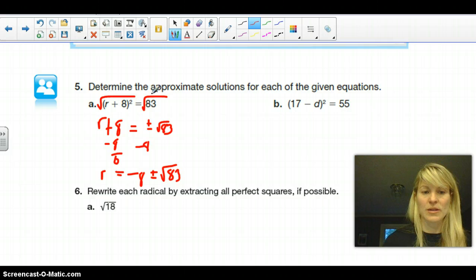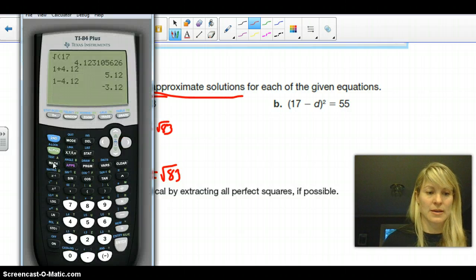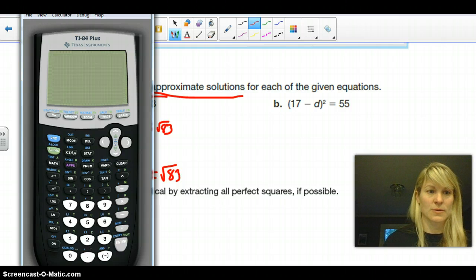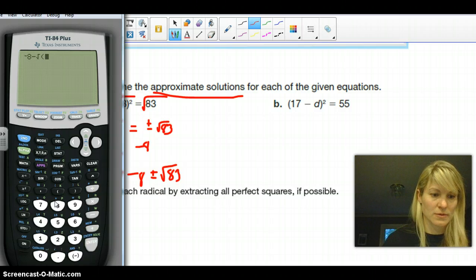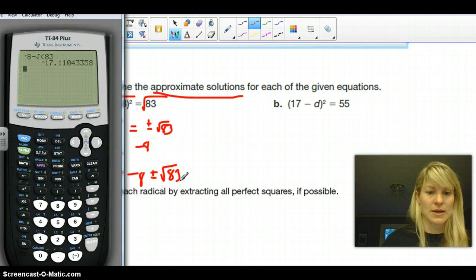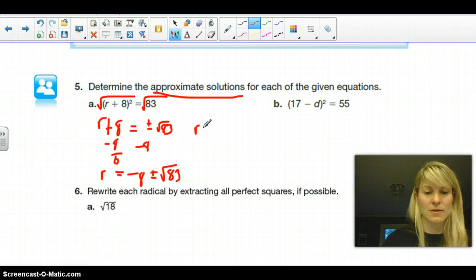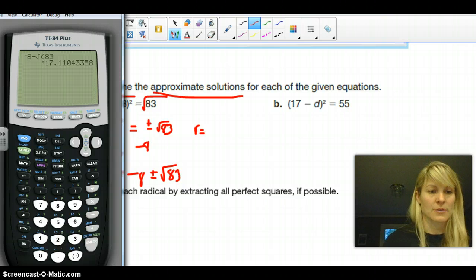And so then we want to give approximate solutions here. So I'm going to get my calculator and clear that out. And then I'm going to do negative 8 minus the square root of 83. And we'll say r equals, and we'll round that to negative 17.11.